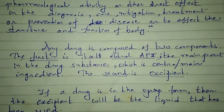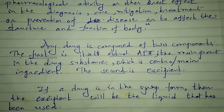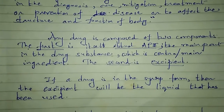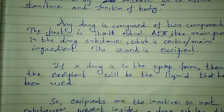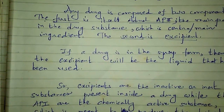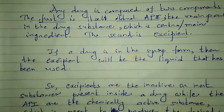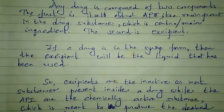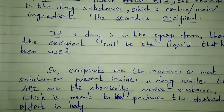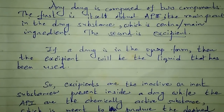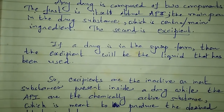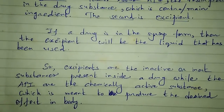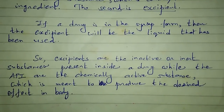Any drug is composed of two components: the main part, which is the API, and the excipient. For example, if a drug is in syrup form, the liquid used as the base is the excipient — not the API. Excipients are the inactive or inert substances present inside a drug, while the API is the chemically active substance.